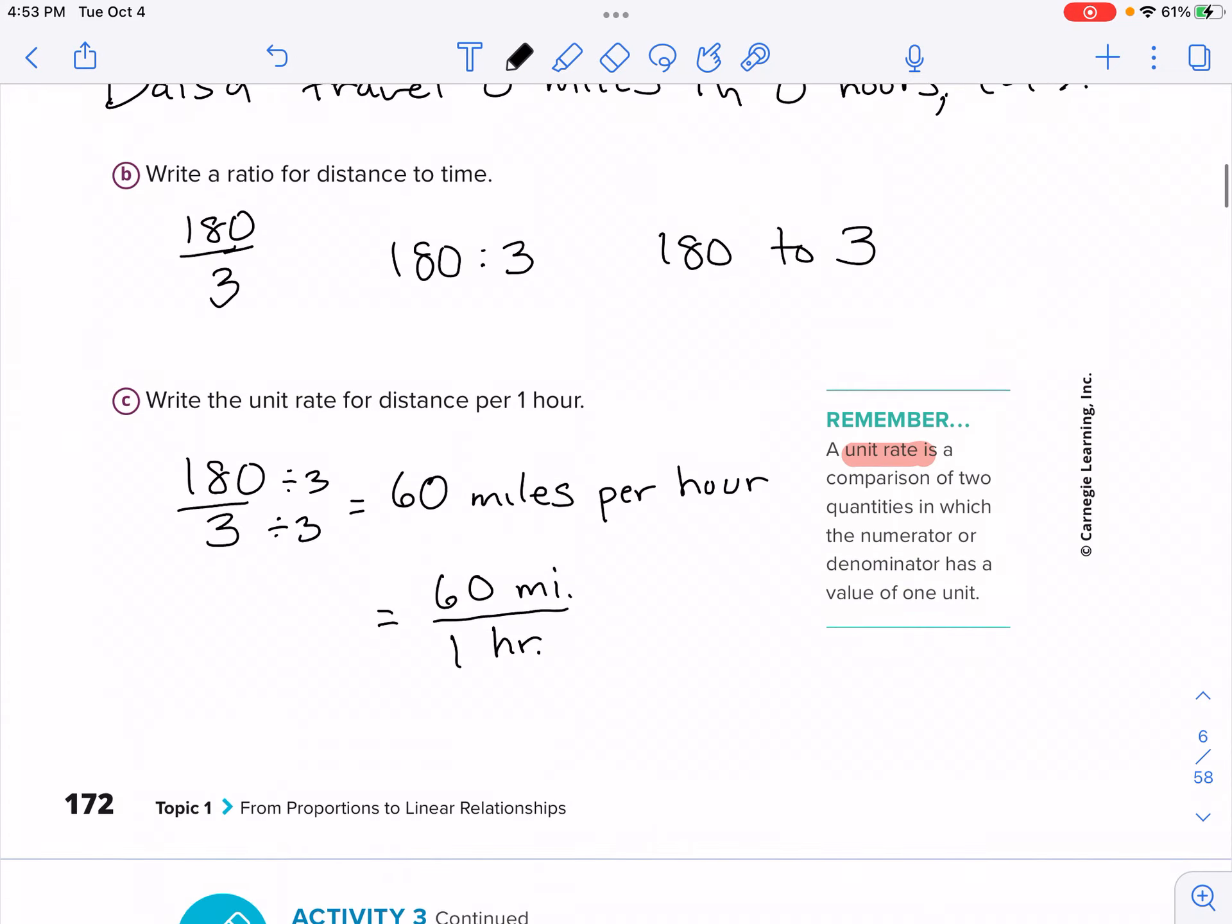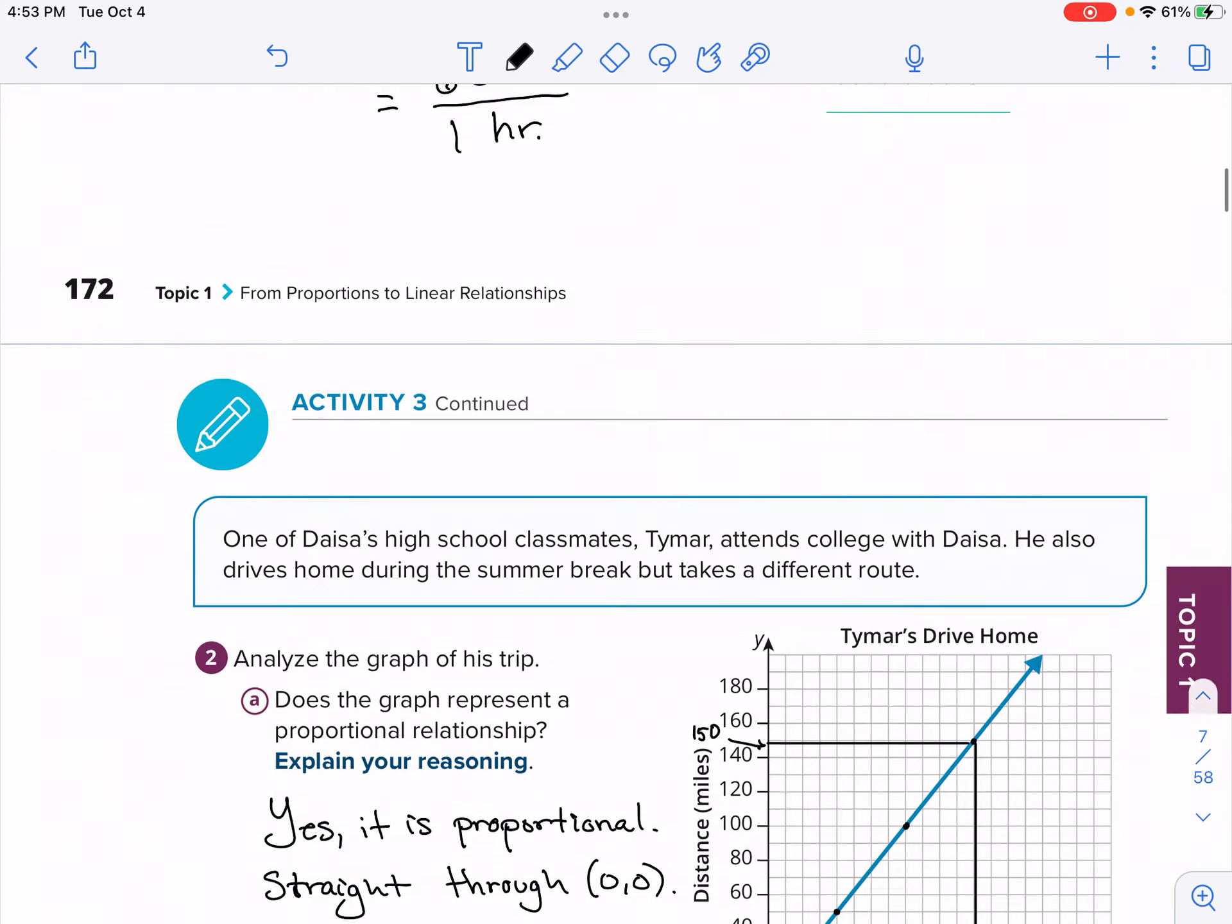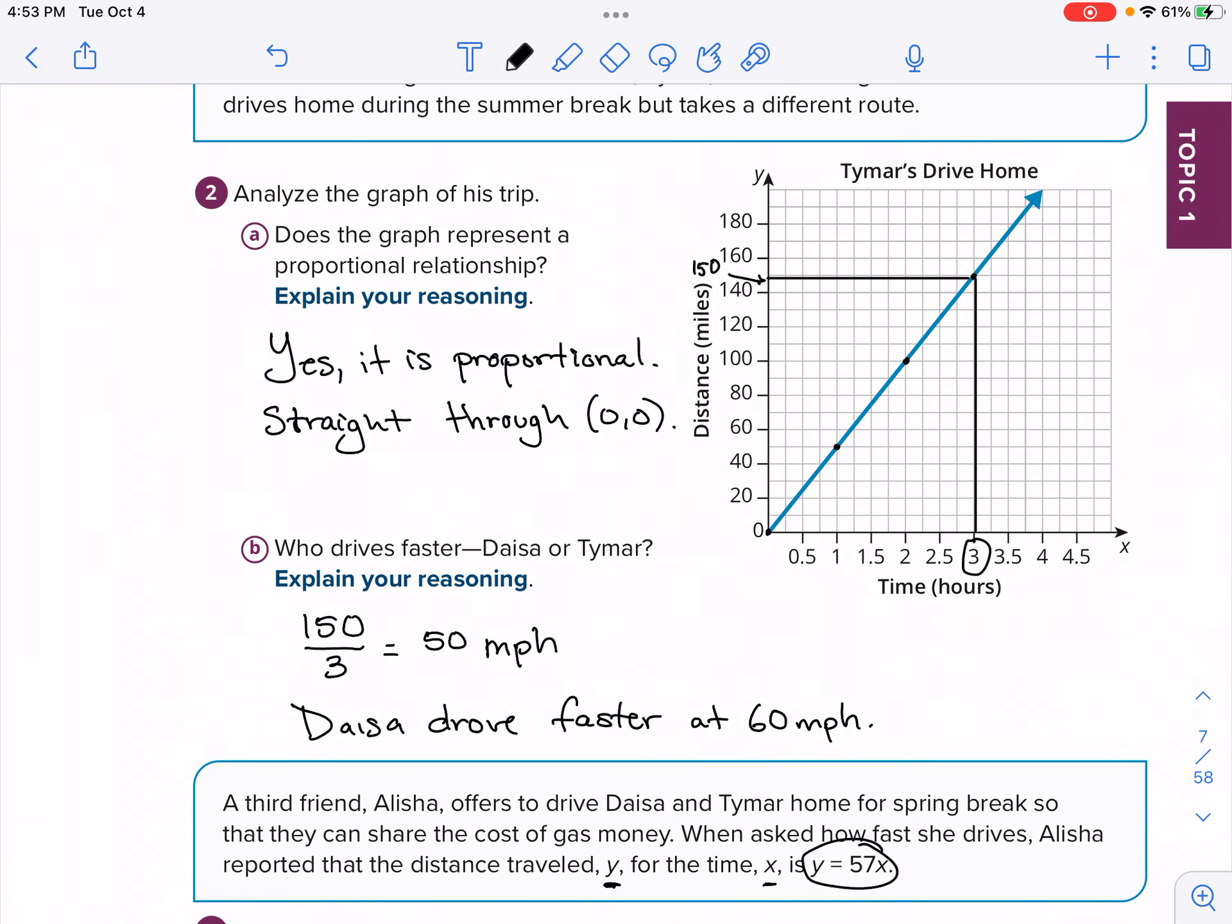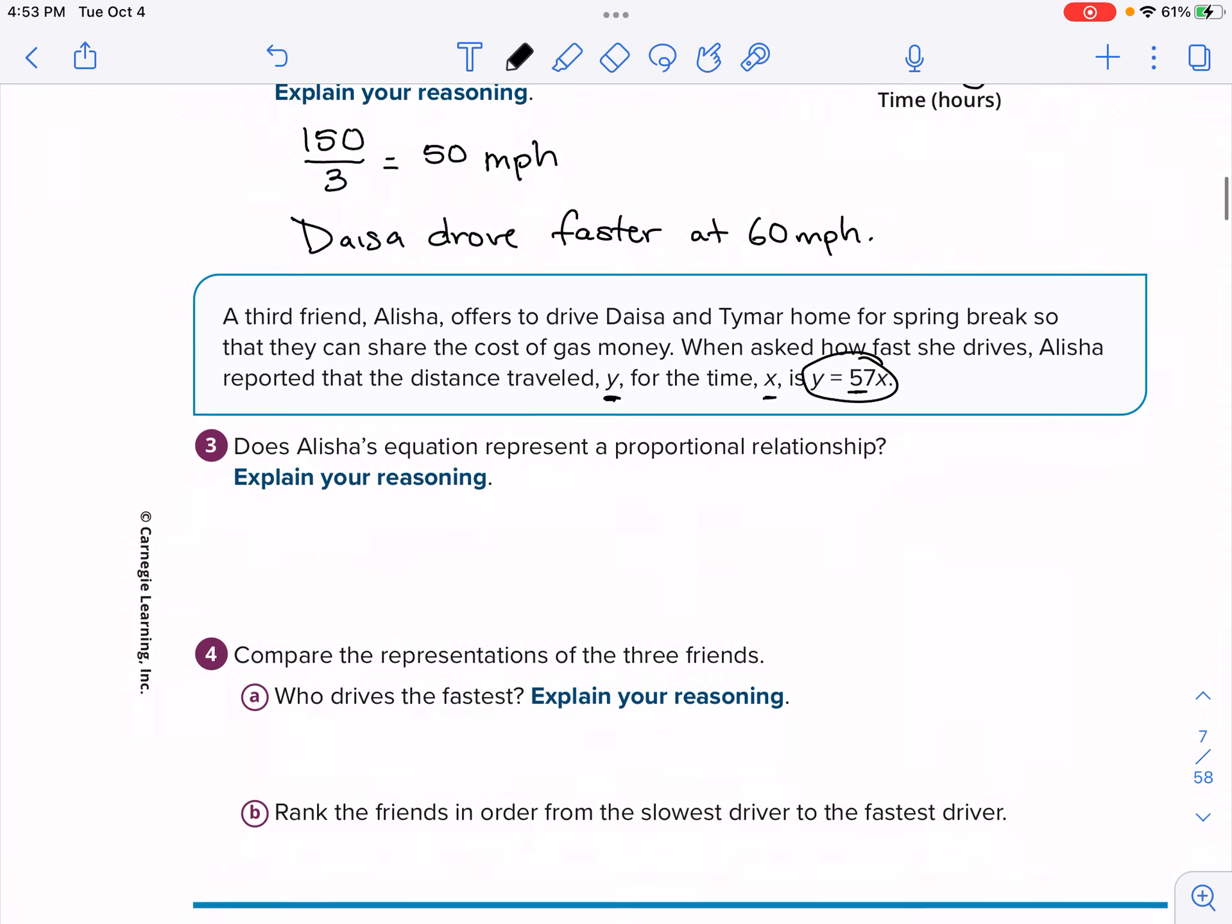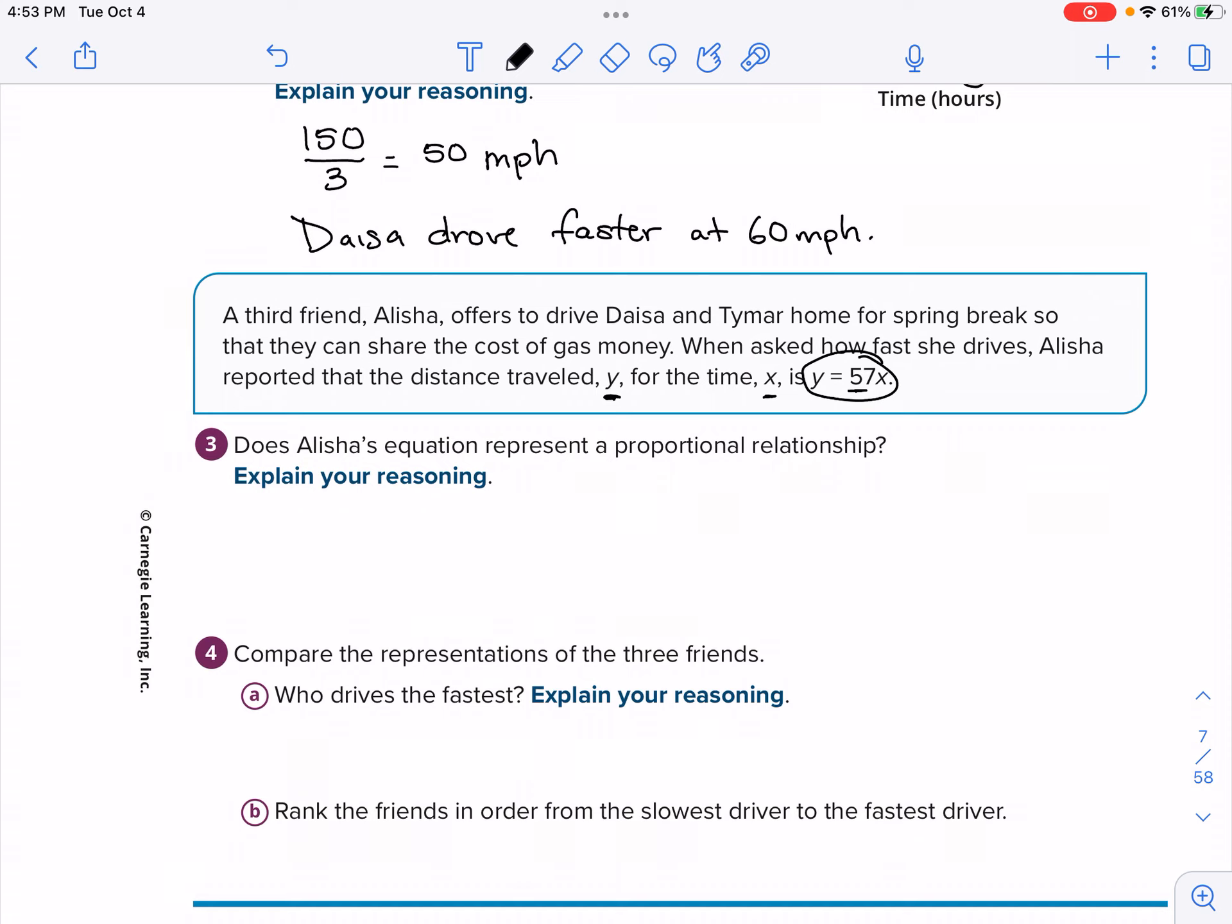Now with a table, you look at each row and you divide it. With a graph, you find a good point and you find out how high it is and how wide it is. For an equation is actually the, I would think the easiest one here. You just find the constant proportionality, which is just as valuable. Anyways, so let's get to number three. Does Alisha's equation represent a proportional relationship? So this is yes, because the equation is of the form. We'll say equation is of the form Y equal to KX. That's what it represents to be proportional.